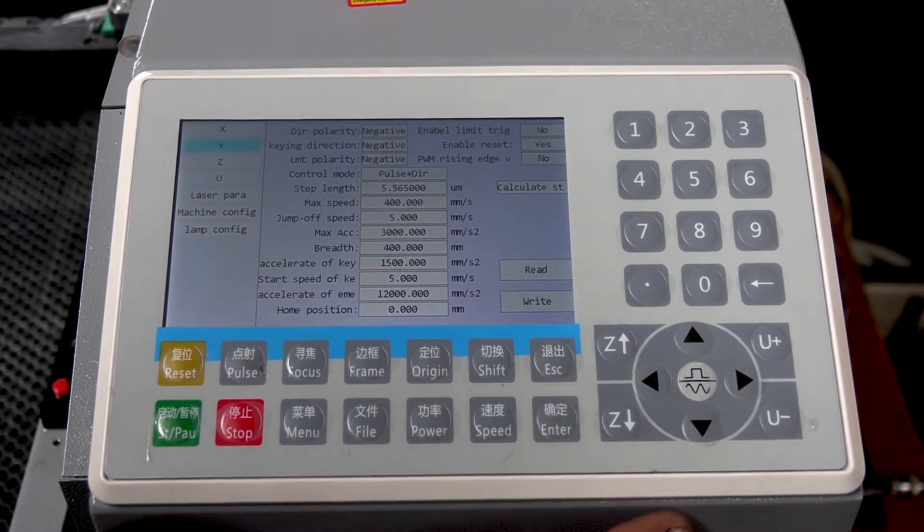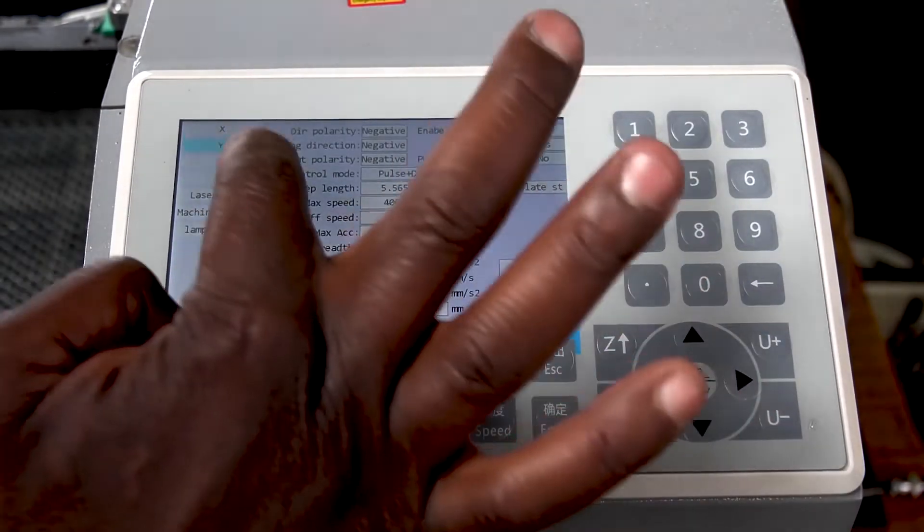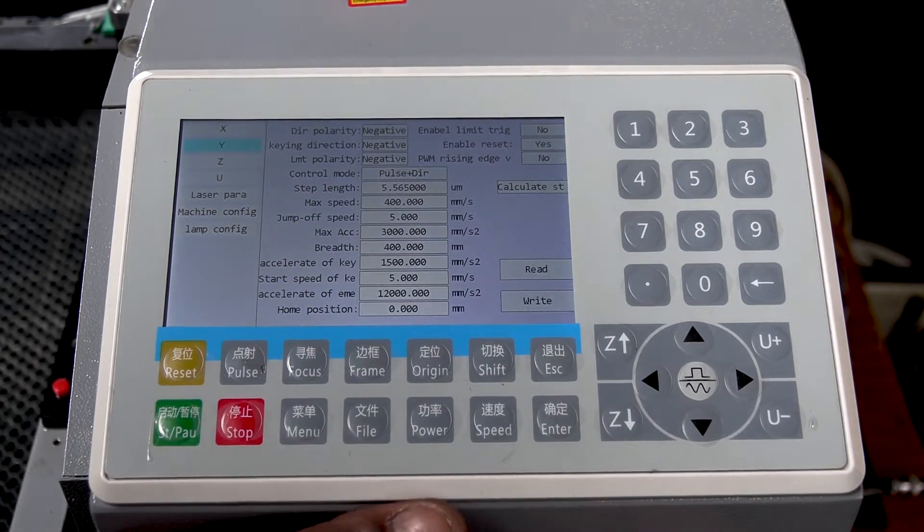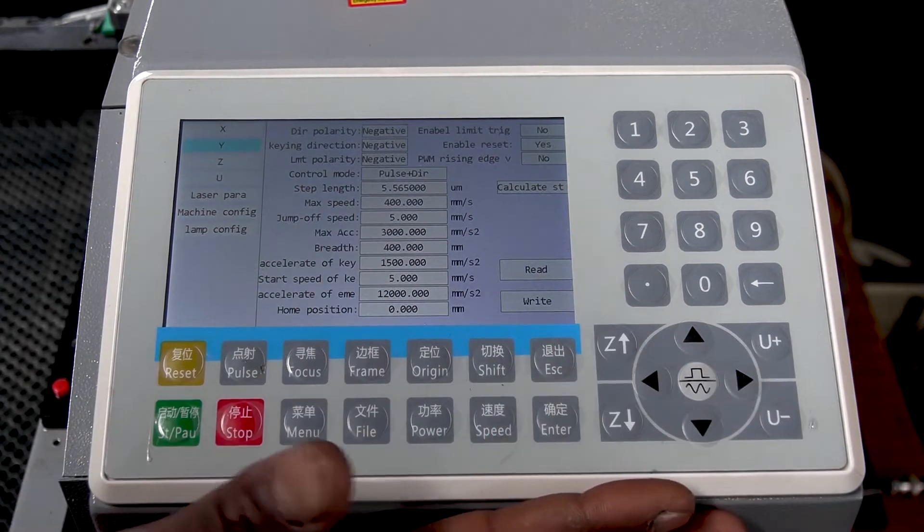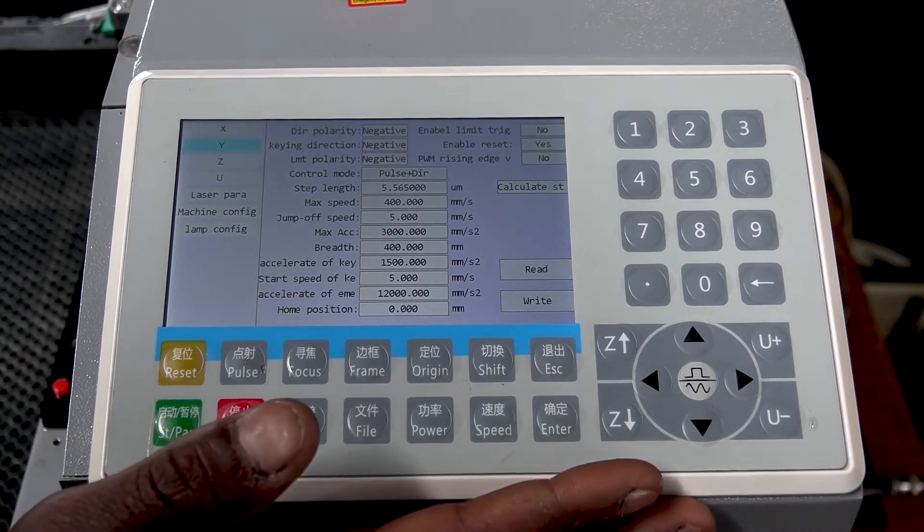And scroll down to Y. So what you want to change only here is the step length value for Y, which we had calculated and input a new one for the rotary attachment.